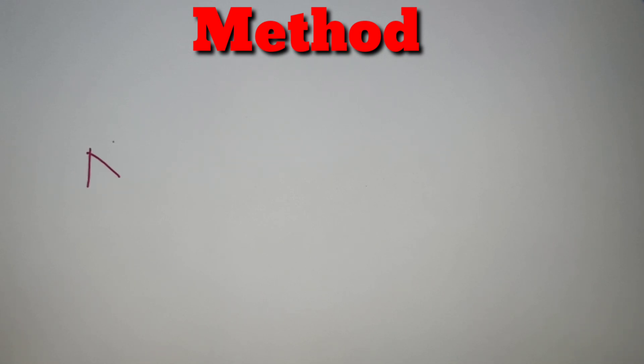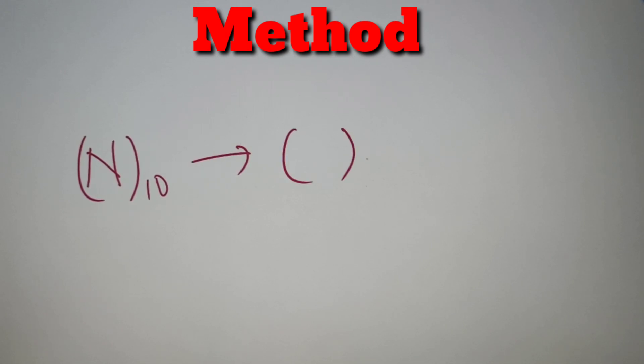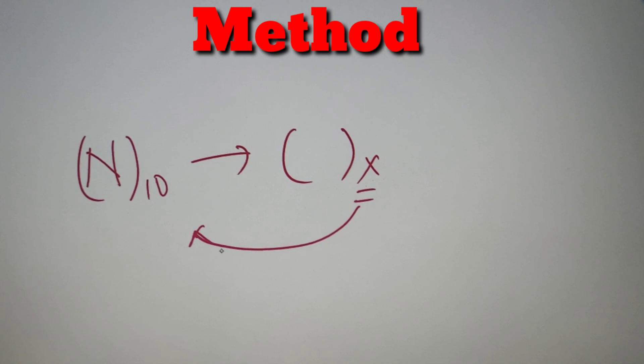The method to find the number of trailing zeros in a different base X is as follows. Let's say the number we have in base 10 is N, and we have to convert it to a different base X and find the number of trailing zeros in that base X. What we have to do is simply find the highest power of X contained in the number N.